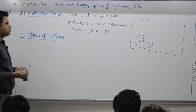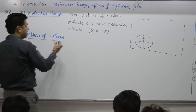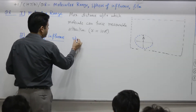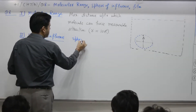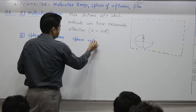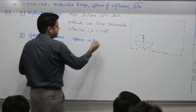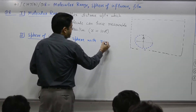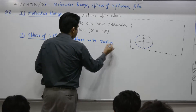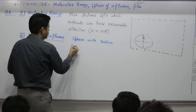This sphere is the sphere of influence. That means the sphere of influence is a sphere with radius equal to the molecular range R.